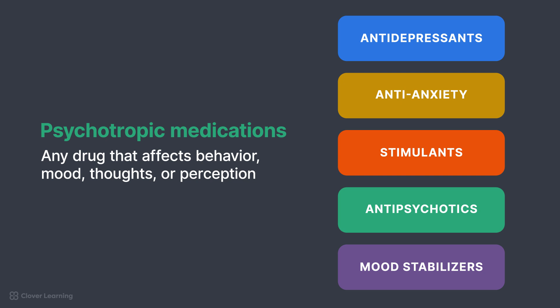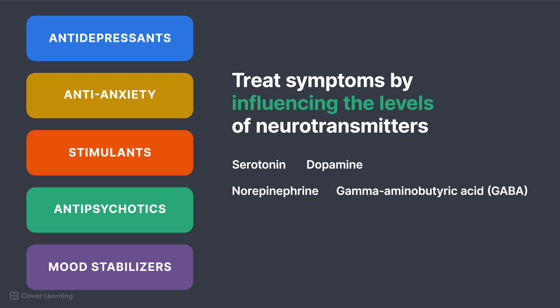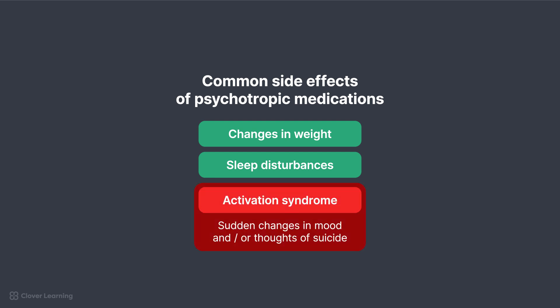In summary, psychotropic medications are any drug that affects behavior, mood, thoughts, or perceptions. They are broken into five classes: antidepressants, anti-anxiety, stimulants, antipsychotics, and mood stabilizers. Each class treats symptoms of mental disorders by influencing the levels of different neurotransmitters like serotonin, dopamine, norepinephrine, and gamma-aminobutyric acid (GABA). There are many common side effects of psychotropics, including changes in weight and sleep disturbances. The most concerning side effect is activation syndrome — a condition in which patients experience sudden changes in mood and/or thoughts of suicide.